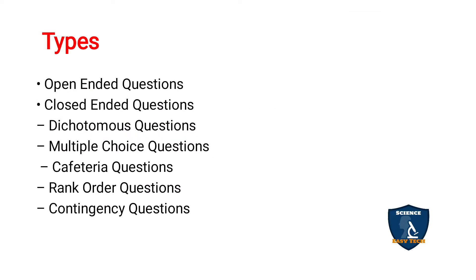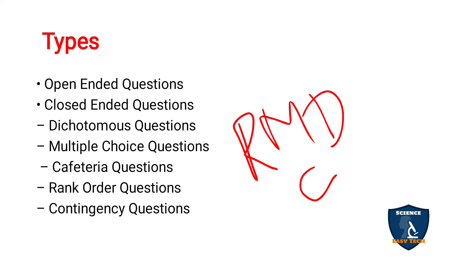Now let's see the types of questionnaires. There are two main types: open-ended questions and closed-ended questions. Under closed-ended questions there are many types, which you can remember using the mnemonic RMD C2: R for rank-ordered question, M for multiple choice question, D for dichotomous question, C for cafeteria question, and another C for contingency question.